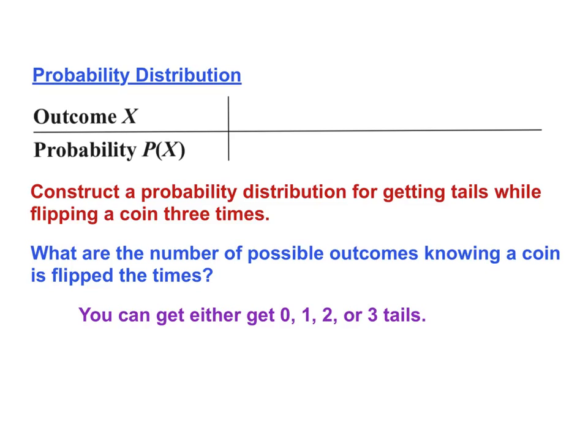Now the other thing that we need to know is the probability of getting each of these possibilities. In order to do that, we need to know the total sample space. We're flipping a coin three times — two possibilities per flip. So two times two times two gives us eight total outcomes in the sample space. Go ahead and construct the sample space of three coin flips.